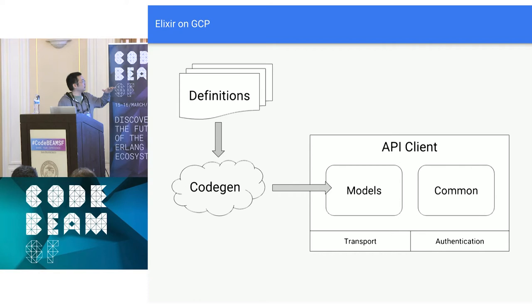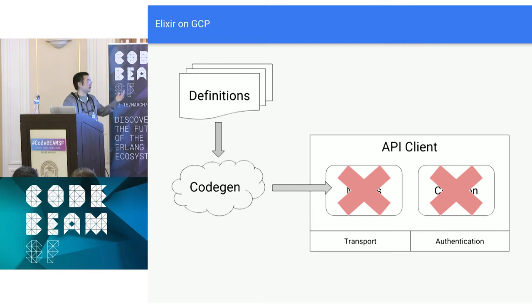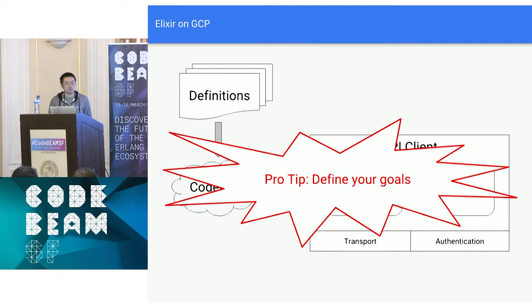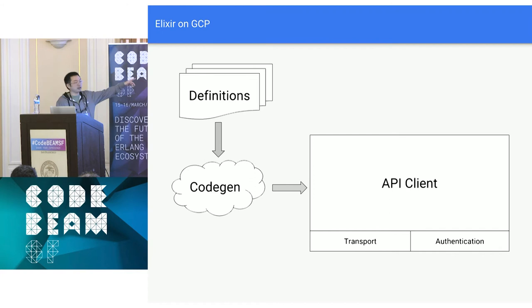Back to our CodeGen diagram: to simplify upfront, we're going to do away with the extensions library and go back to generating the entire API client with CodeGen. Pro tip: define your goals and define what you're trying to accomplish with your client libraries. In our case, we defined a resource constraint, so we had to figure out how to get the most bang for our buck while also having a plan for the future given more resources. In the future you'll have perfect hindsight, but if you record your goals and motivation, you can be confident you did the best you could at the time.